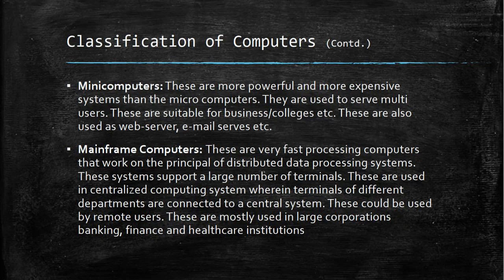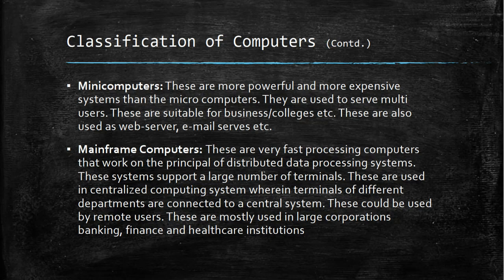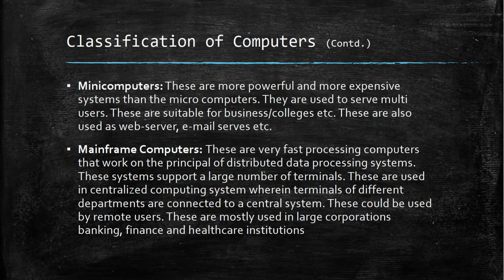Minicomputers are more powerful and more expensive than microcomputers. They serve multiple users and are suitable for large businesses, colleges, and are also used as web servers and email servers. Mainframe computers are very fast processing computers that work on the principle of distributed data processing systems. They support a large number of terminals and are used in centralized computing systems where terminals of different departments are connected to a central system. They can be used by remote users and are mostly used in large corporations, banking, finance, and healthcare institutions.